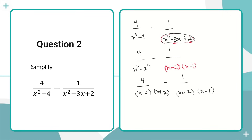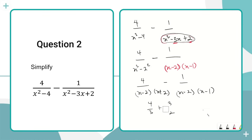Now we have something like solving a fraction sum — just as with 4 over 3 plus 3 over 2 we find the LCM of 3 and 2 to get 6, here we find the LCM of (x minus 2), (x plus 2), and (x minus 1). The LCM is (x minus 2)(x plus 2)(x minus 1).